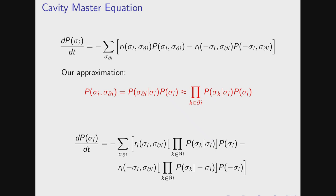This is, of course, not necessarily true in the dynamics, but it's an approximation. If you do this, it's very easy to get this equation — you just plug in the factorization. Still, you haven't solved anything because you still have the problem of how to estimate this conditional probability distribution.